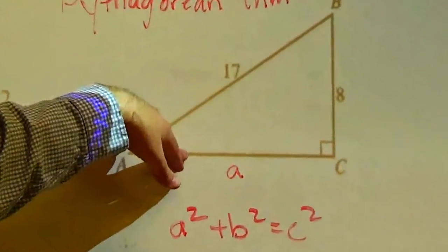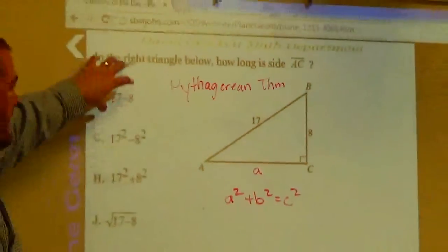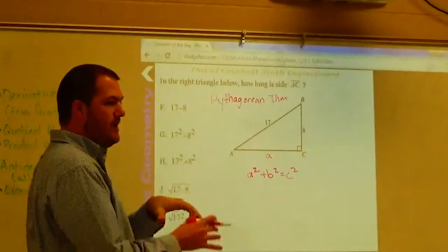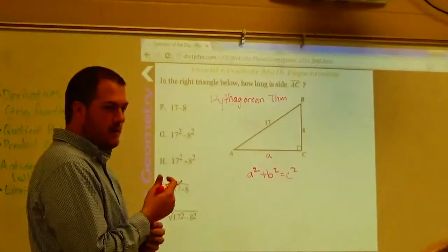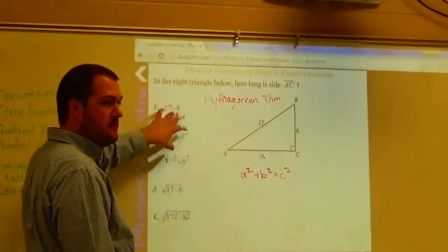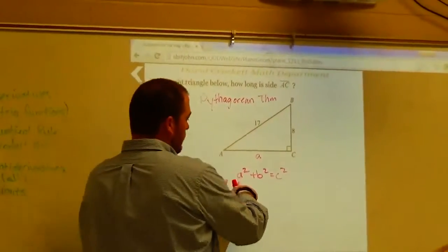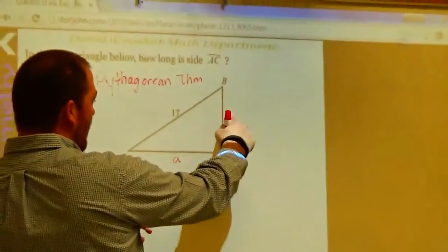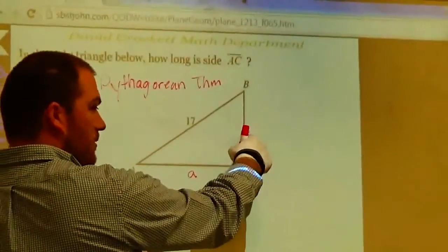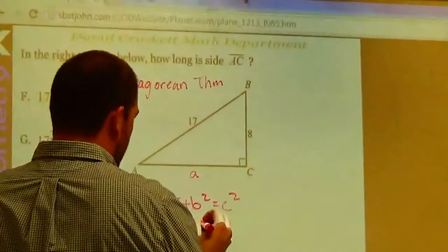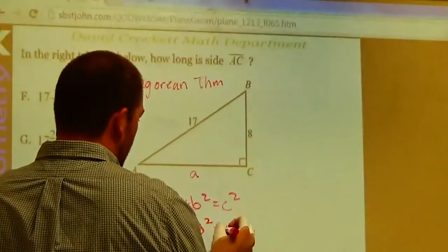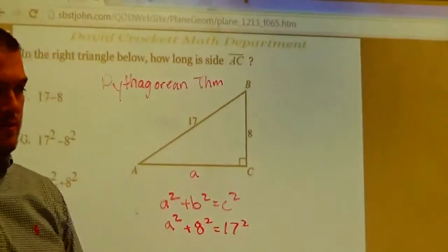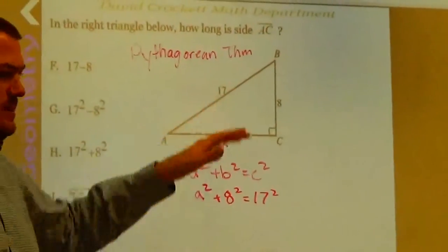That's what we're looking for. It doesn't actually calculate it out over here, it just says what would I do to solve it — how would I set it up, essentially. I'm going to show you where they get these answers from. So I'm going to plug in — well, I don't know a, so I'm going to leave it as a squared. I'm going to plug 8 in for b, because that's my other leg. So plus 8 squared equals 17 squared. 17 — or sorry, c — is always the hypotenuse.